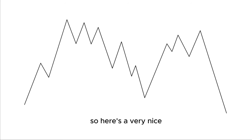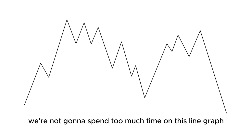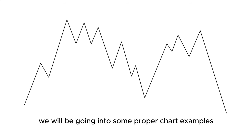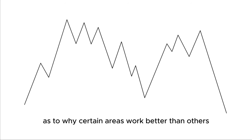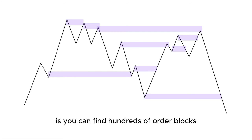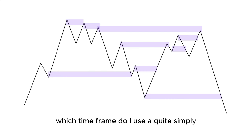Here's a very nice textbook example of how we can start looking at our zones. We're not going to spend too much time on this line graph because later on we will be going into some proper chart examples. The problem with trading solely off order blocks is you can find hundreds of order blocks throughout the course of a day on multiple different time frames. The question I get asked quite a lot is which time frame do I use?